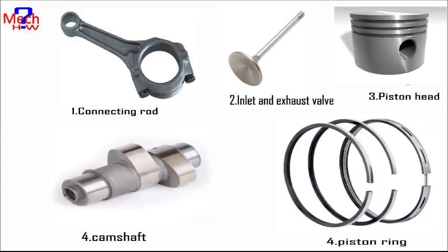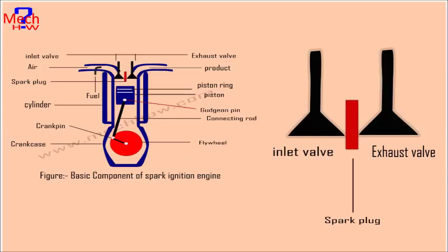Nine, piston rings. Piston rings, fitted into the slots around the piston, provide a tight seal between the piston and the cylinder wall, thus preventing leakage of combustion gases. Ten, camshaft. The camshaft and its associated parts control the opening and closing of the two valves. The associated parts include push rods and rocker arms.